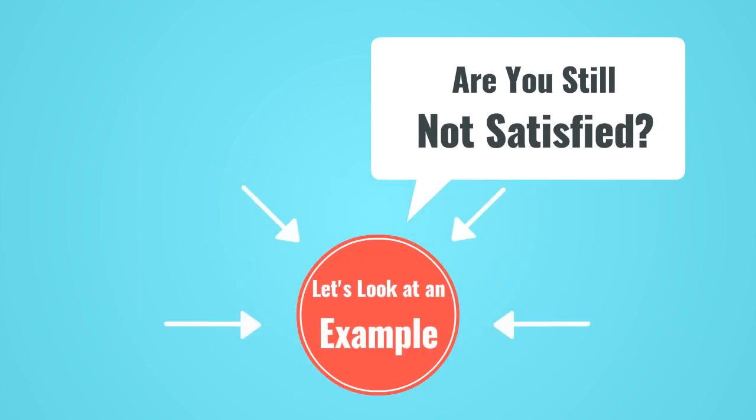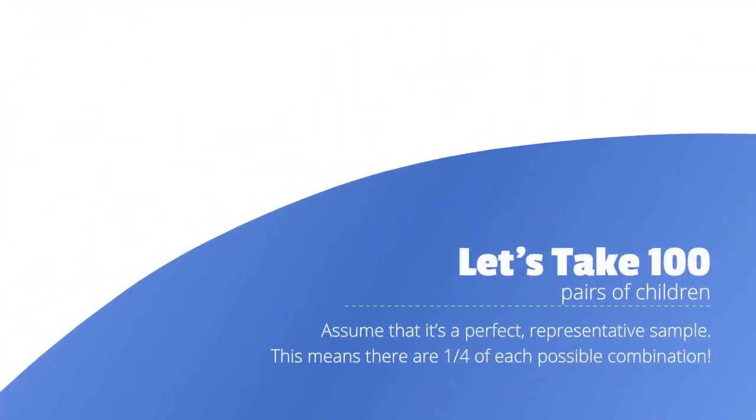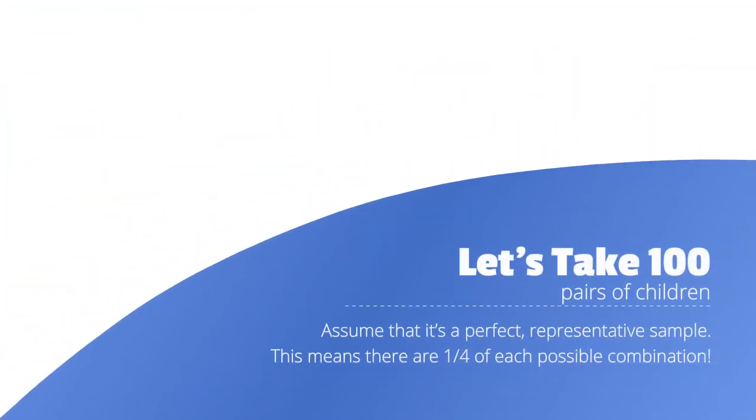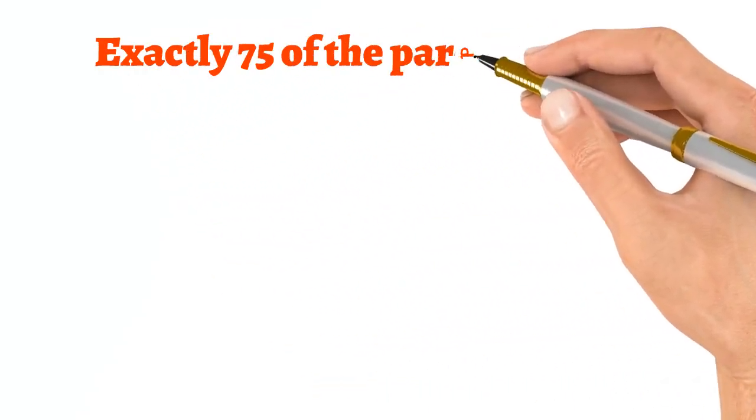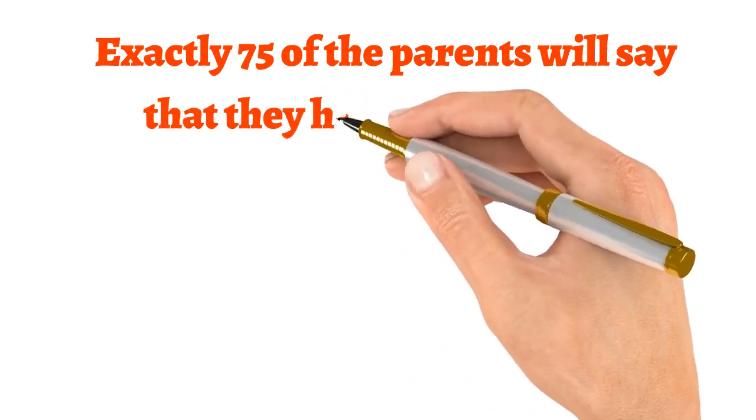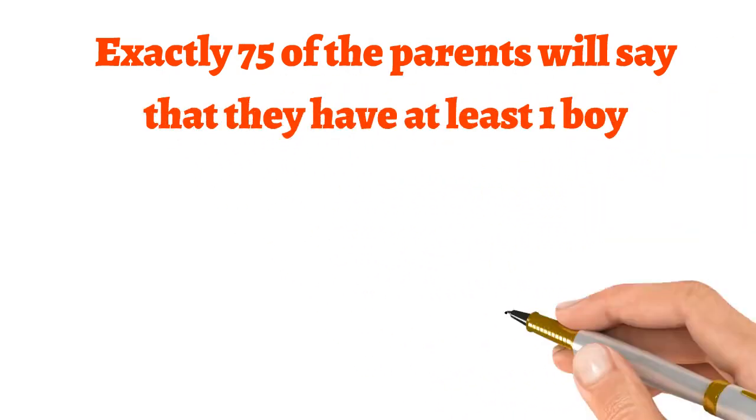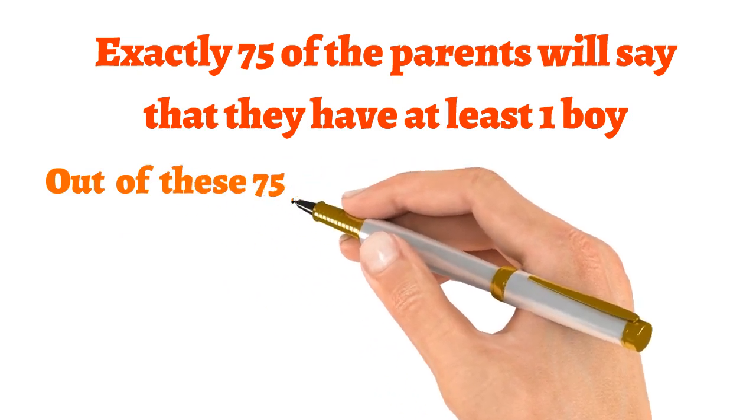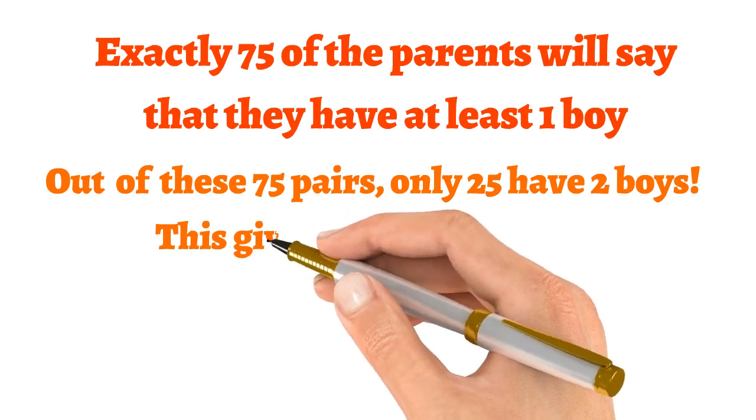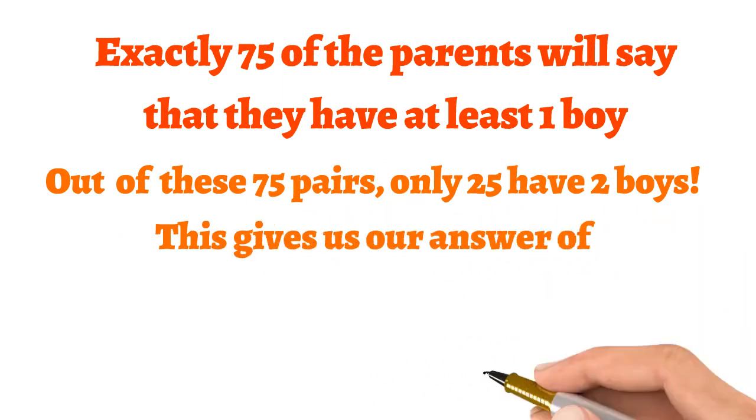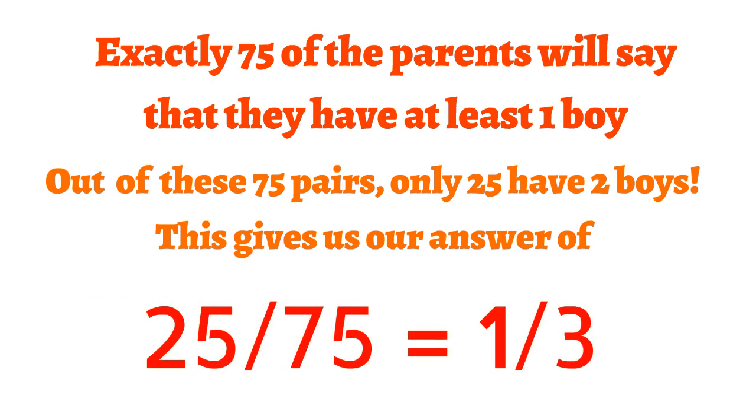Are you still not satisfied? Let's look at an example. Let's take a hundred pairs of children. Assume that it's a perfect representative sample. This means there's a one-fourth chance of each possible combination. Exactly 75 of the parents will say that they have at least one boy. Out of these 75 parents, only 25 have two boys. This gives us our answer of 25 divided by 75, which is once again, one-third.